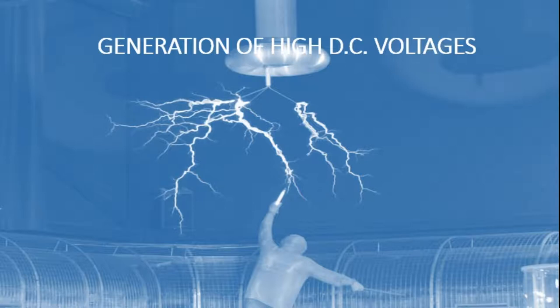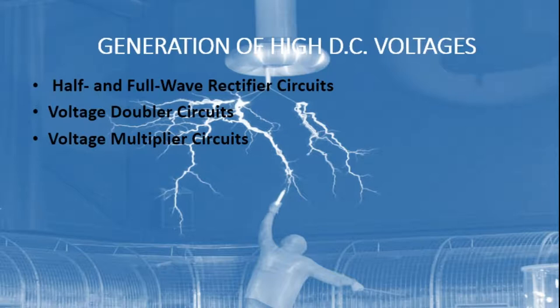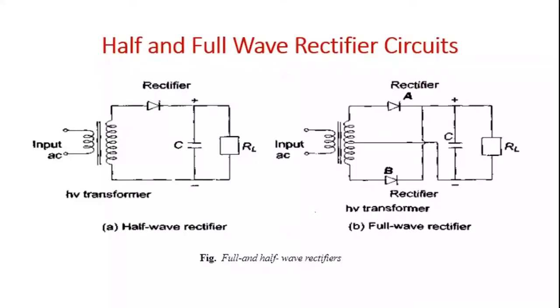For generation of DC voltages up to 100 kV, electron valve type rectifiers are used and the output current is of 100 mA. A rectifier valve requires special construction for the cathode and filaments, since a high electrostatic field of several kV per centimeter exists between the anode and the cathode during the non-conduction period. Methods for generation of high DC voltages include: half and full wave rectifiers, voltage doubler circuits, voltage multiplier circuits, and electrostatic machines called Van de Graaff generators.